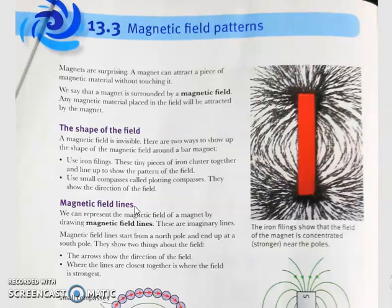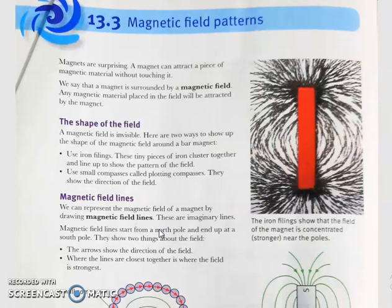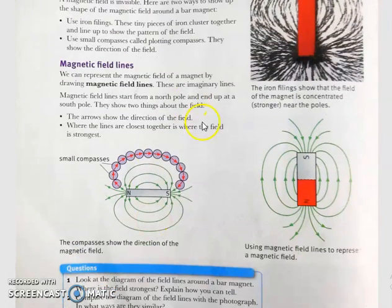We can represent the magnetic field of a magnet by drawing magnetic field lines. This representation is known as magnetic field lines — they are imaginary lines. The most important point is that magnetic field lines start from the north pole and end at the south pole.